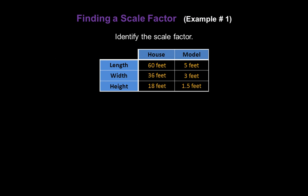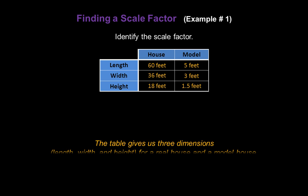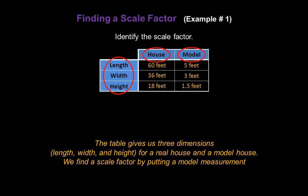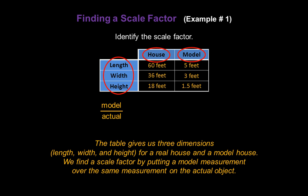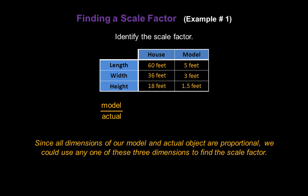Now take a look at this table and let's identify the scale factor. The table gives us three dimensions — length, width, and height — for a real house and for a model of that same house. We find a scale factor by putting a model measurement over the same measurement on the actual object: model over actual. Since all dimensions of our model and actual object will be proportional, we could use any one of these three dimensions to find the scale factor.